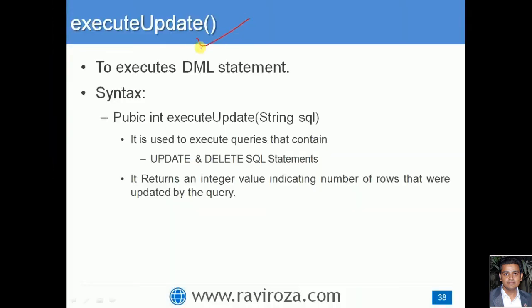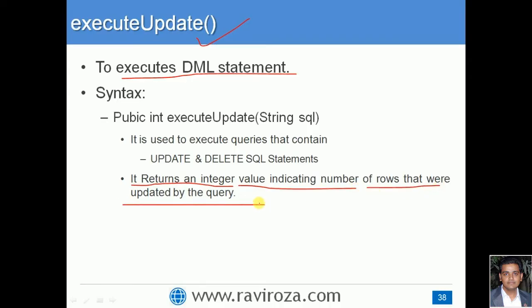The last method is executeUpdate(), used to execute DML — Data Manipulation Language — meaning INSERT, UPDATE, and DELETE statements. These are to be executed by the executeUpdate() method. Unlike execute() or executeQuery(), executeUpdate() is specifically for INSERT, UPDATE, and DELETE queries. It returns an integer value indicating the number of rows that were updated or affected by the query.